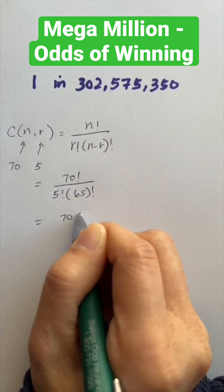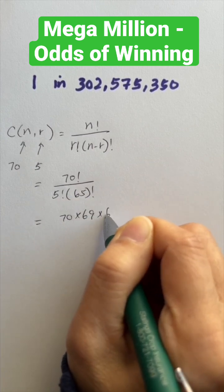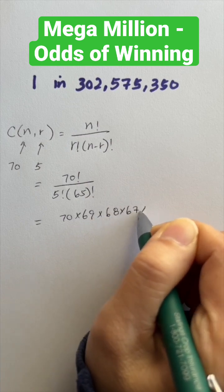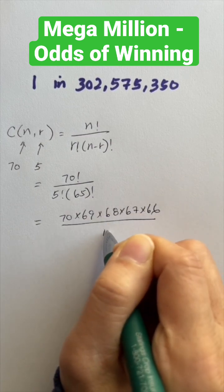This is equal to 70 times 69 times 68 times 67 times 66 over 120.